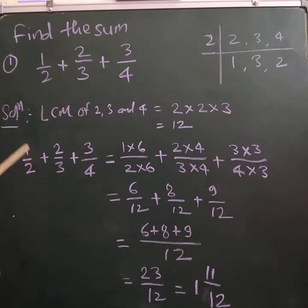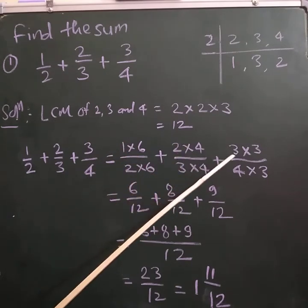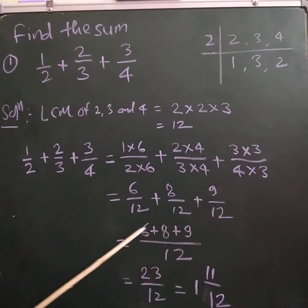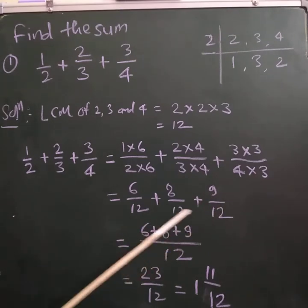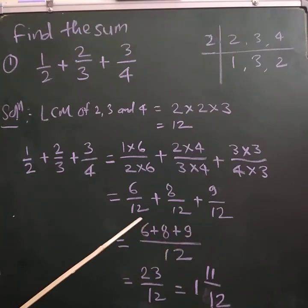So 1/2 + 2/3 + 3/4 equals 6/12 + 8/12 + 9/12. Now here we find that each fraction has the same denominator. Now it is like fractions.